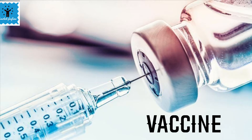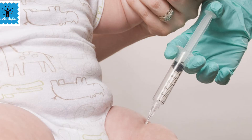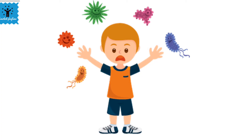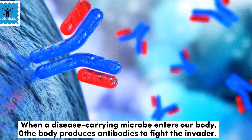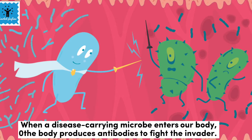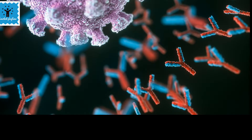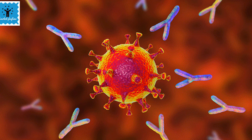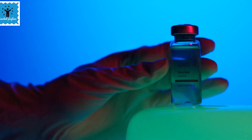Microorganisms are also used in the production of vaccines. When a disease-causing microbe such as a virus or bacterium attacks our body, it enters and multiplies, and our immune system produces antibodies to fight the invaders. The body also remembers how to fight the microbe if it enters again. So if any dead or weak microbes are introduced into a healthy body, the body fights and kills the invading bacteria by producing suitable antibodies, and those antibodies remain in the body, protecting us from the disease-causing microbes.